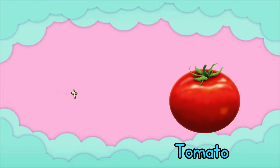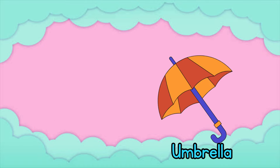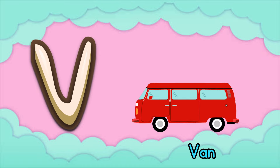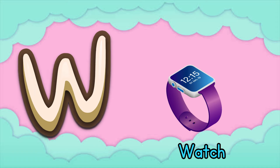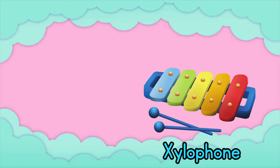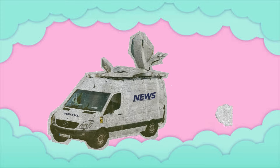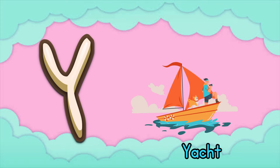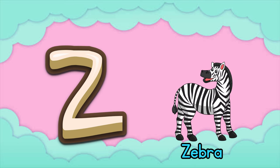U is for umbrella, u-u-umbrella. V is for van, v-v-van. W is for watch, w-w-watch. X is for xylophone, x-x-xylophone. Y is for yacht, y-y-yacht. Z is for zebra, z-z-zebra. Dum-dee-da-dum-dee-dum.